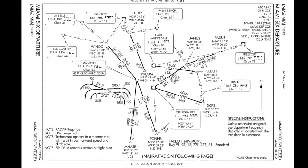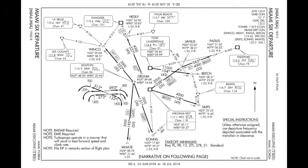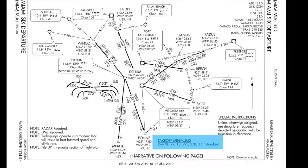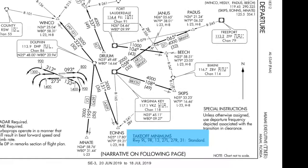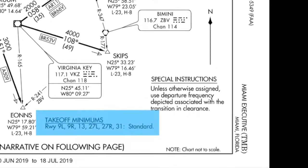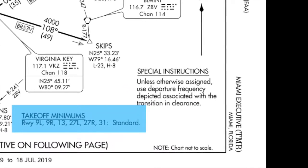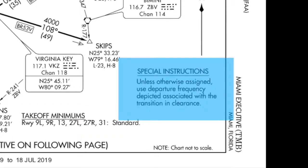If you continue to the right, you'll see the takeoff minimums. Runway 9 Left, 9 Right, 1-3, 27 Left, 27 Right, and 31 all have standard takeoff minimums. Any special instructions will be next to that in the special instructions area on the bottom right.